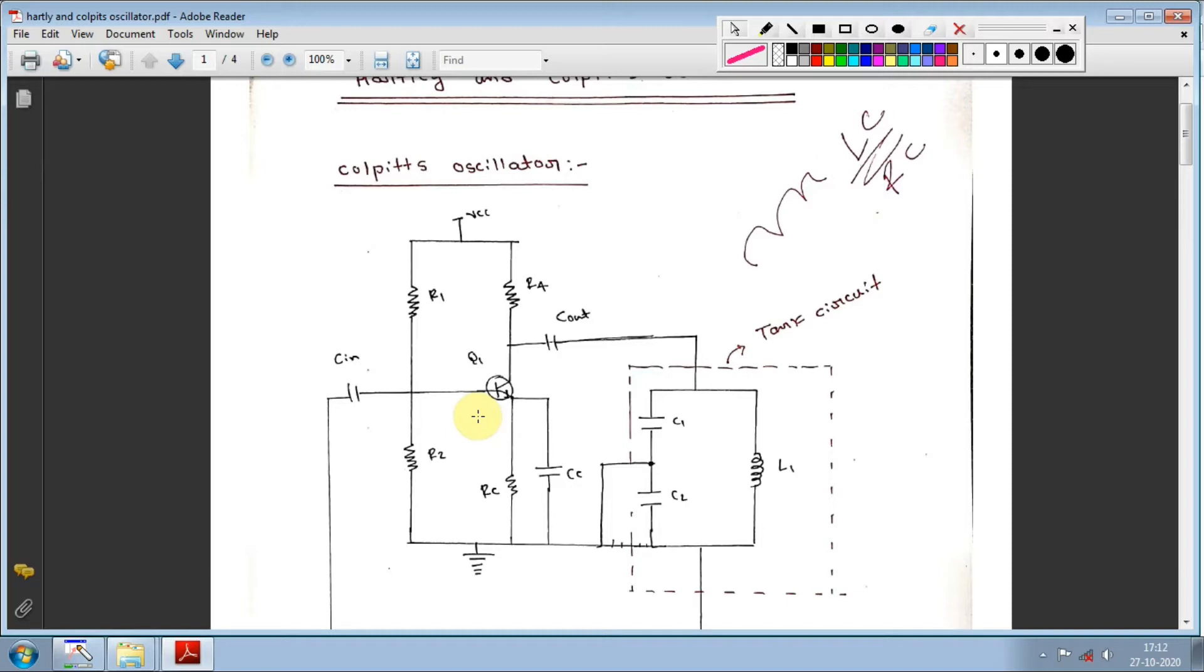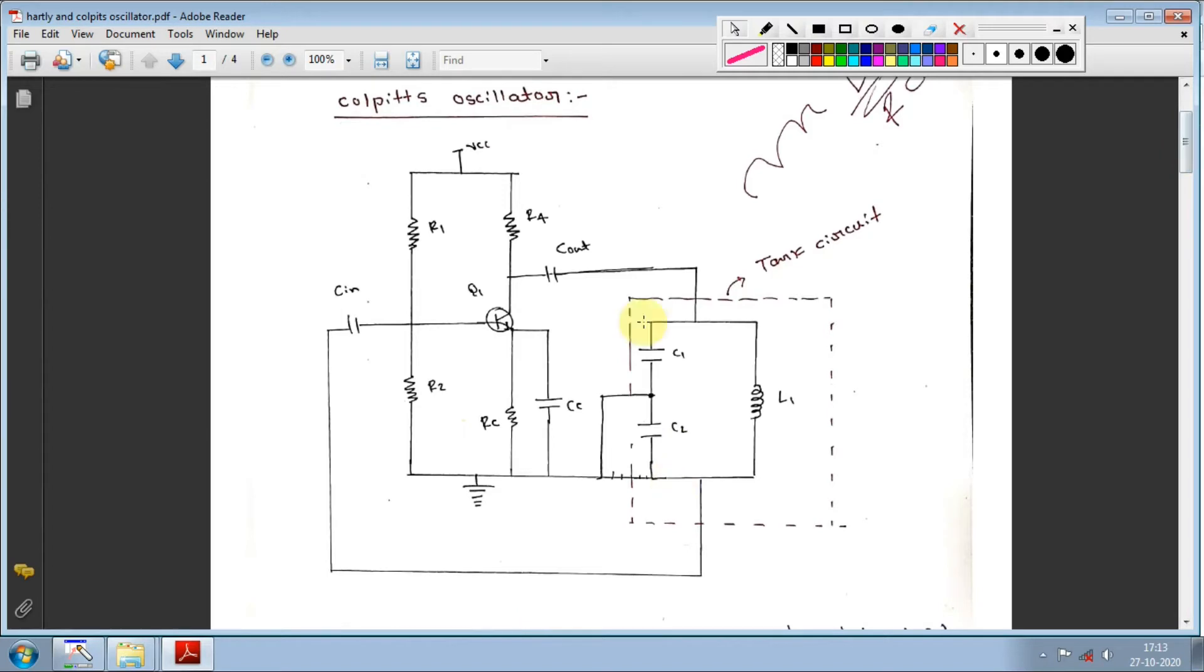This is a common emitter amplifier circuit. Here is the input capacitor, output capacitor, and voltage divider circuit with R1 and R2. This is the bypass capacitor, collector side resistance, and emitter side resistance. You can see the base connection here.